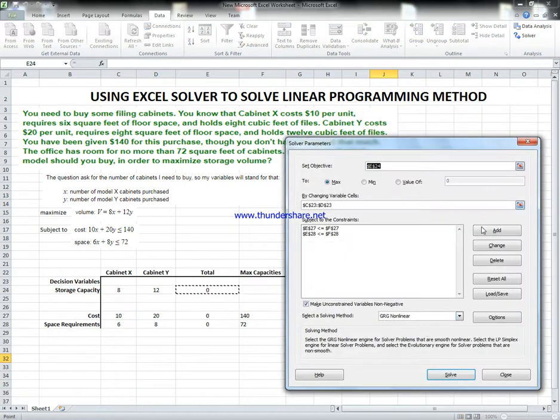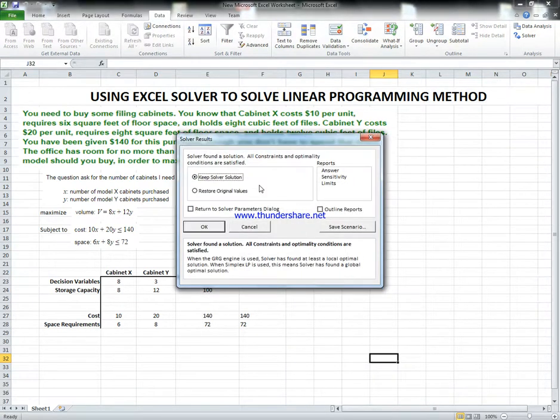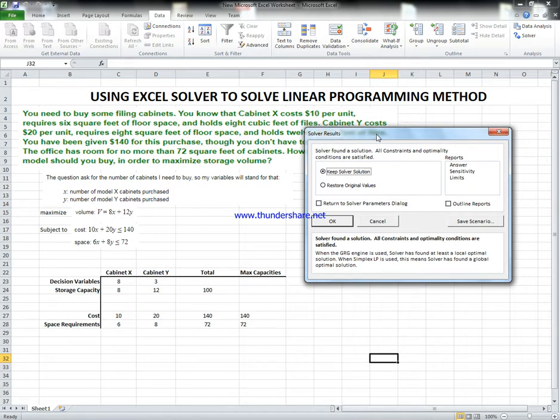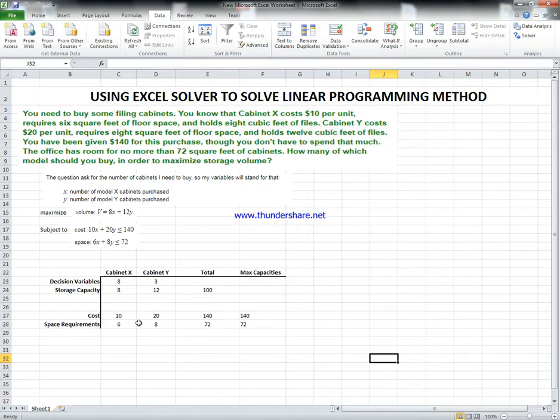And solve. So once we solve the problem as it is, keep solver solution or restore original values. We say okay for our example and we get the result. At the end, 8 for filing Cabinet X, 3 for Cabinet Y, and the solution is 100. Depending on the cost and the requirement, we have used all the money for cost and we used all the space requirement if you buy 8 of X and 3 of Y.